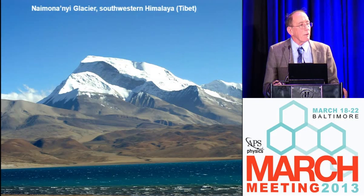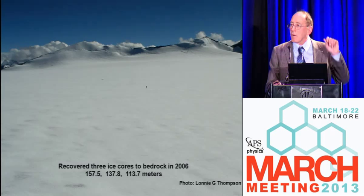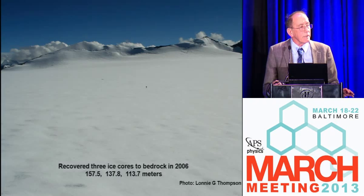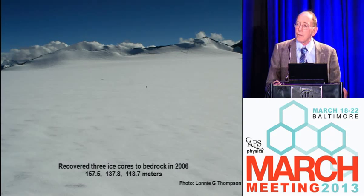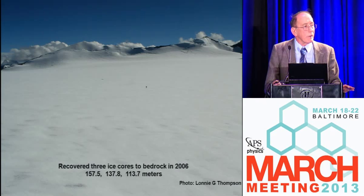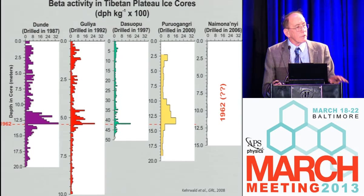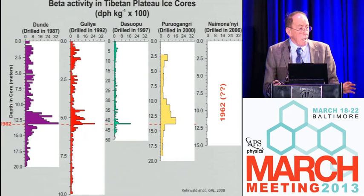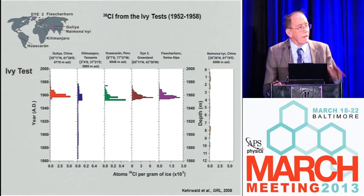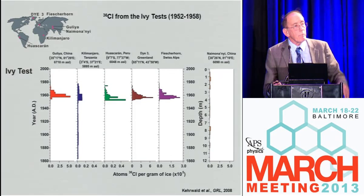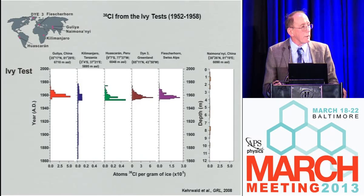We drilled three cores to bedrock here — up to 158 meters deep. The first thing you do when you bring the cores back is look for radioactive bomb horizons. All the thermonuclear tests done in the atmosphere have left a radiation level. The first one we look for is the 1962–63 Soviet test, and you can see in all previous cores drilled in that part of the world it's there — but you don't see it on Naimona'nyi. We also look for the IV test from 1952 to 1958, further back in time — we find that in chlorine-36 preserved in ice around the world, but you don't find it on Naimona'nyi. You don't find it because that glacier is melting from the top down. It's no longer accumulating in today's world, and this has tremendous implications for water resources in that area.